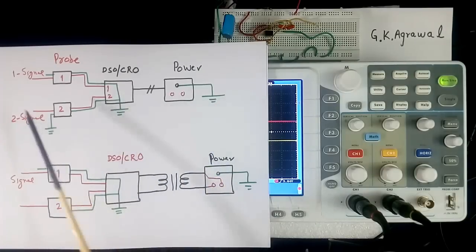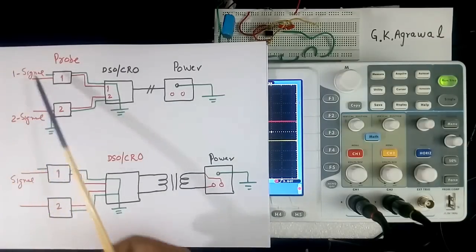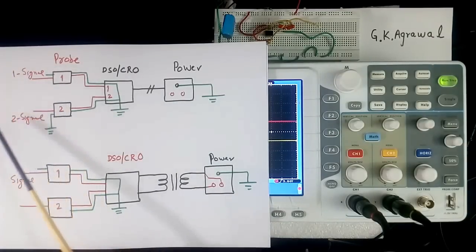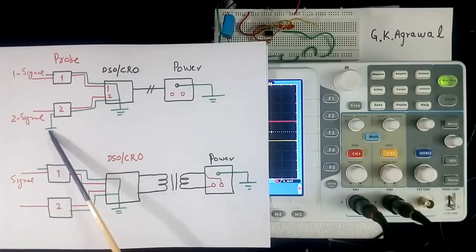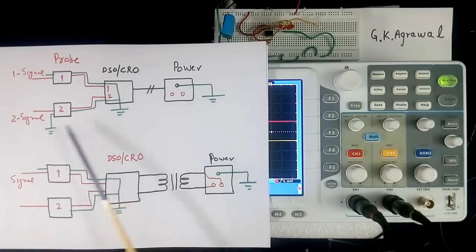Suppose here we are measuring 230 volt or 110 volt AC. Then common point, earth point of this incoming signal, and this power supply should be same. It should not be different.